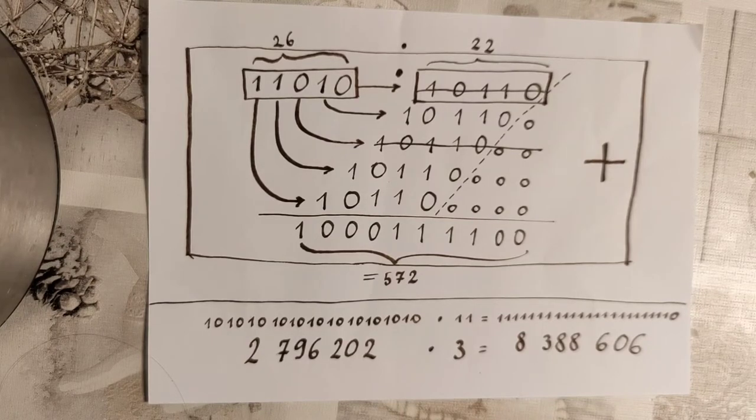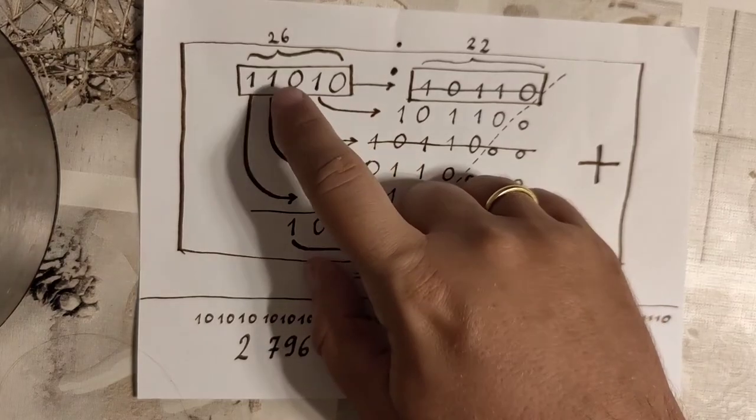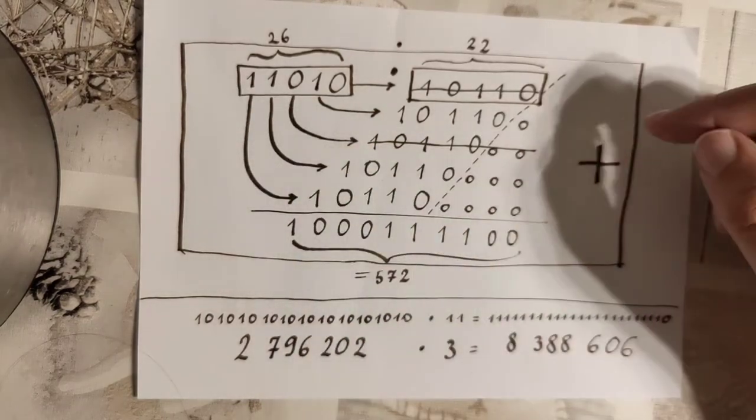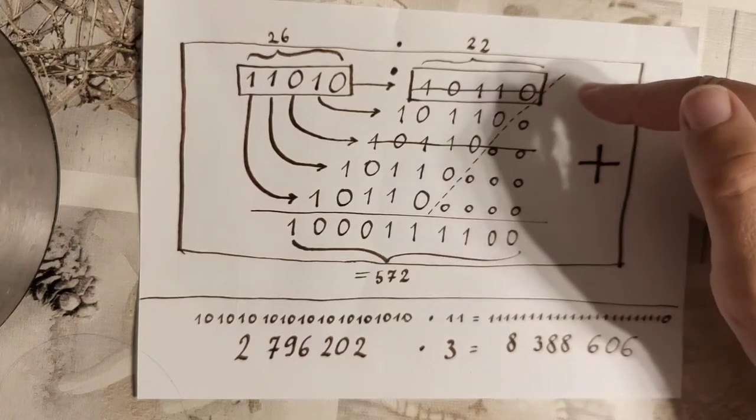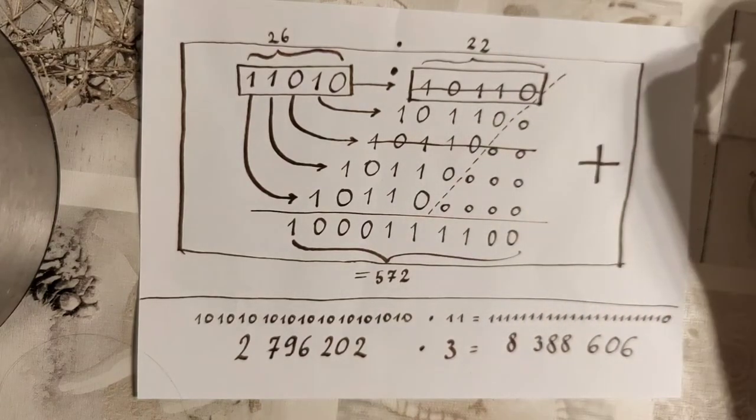Namely, each time you go for the next position you're actually adding the other number once again by a power of two.